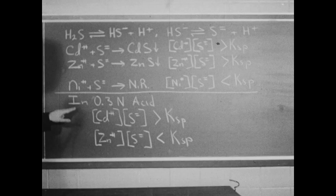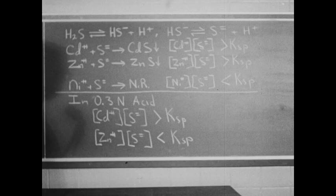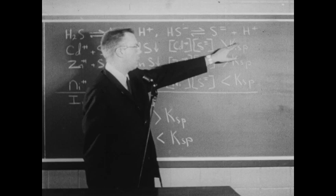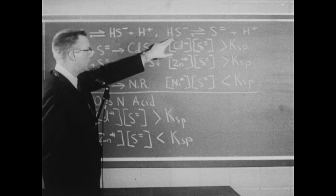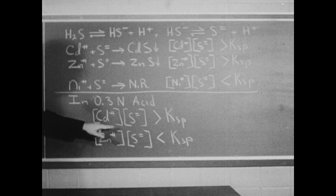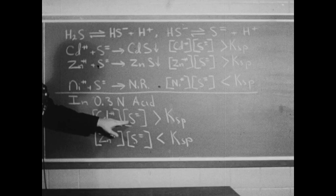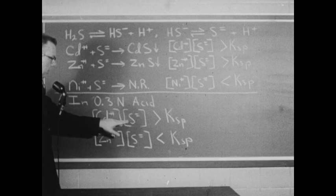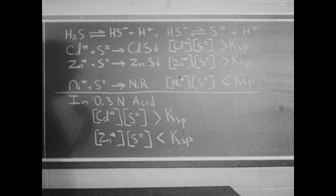Then we studied the reactions of cadmium and zinc ions in three-tenths normal hydrochloric acid solution. In a three-tenths normal acid solution, the hydrogen ion concentration is fairly large, and therefore the ionization of the HS⁻ ions is repressed, and fewer sulfide ions are present. Under those circumstances, there was still a sufficient quantity of sulfide ion to cause the precipitation of cadmium sulfide — so the concentration of cadmium ion times the sulfide ion concentration still exceeded the solubility product constant for cadmium sulfide.